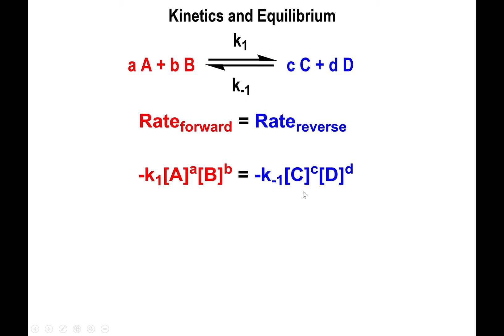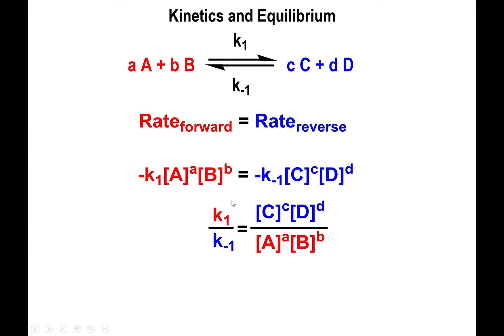That equals the reverse process: negative K₋₁ times the concentration of C raised to c times the concentration of D raised to d. You can then divide both sides by the concentration of A, the concentration of B, and by negative K₋₁, to end up with products on top and reactants on the bottom raised to their corresponding balancing coefficients.